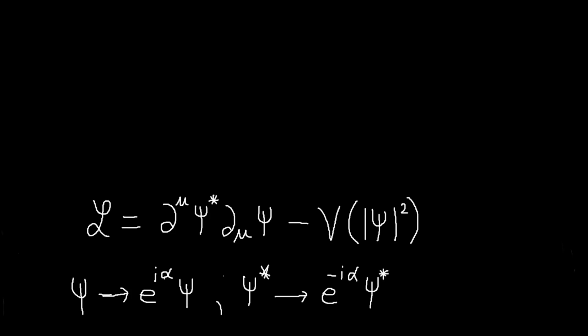And so psi, we have psi is just a complex scalar field. And so we're going to let psi go to e to the i alpha psi. And if we do that, then the complex conjugate of psi will be e to the minus i alpha times complex conjugate of psi.